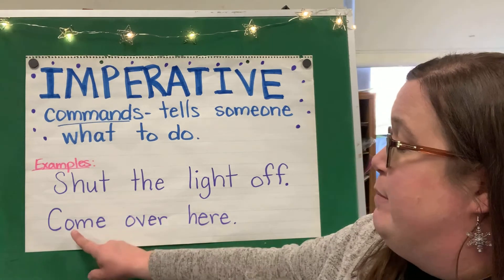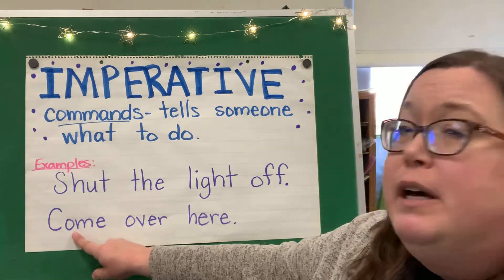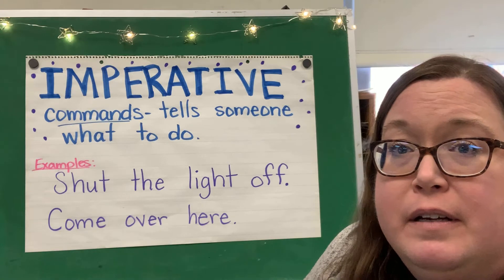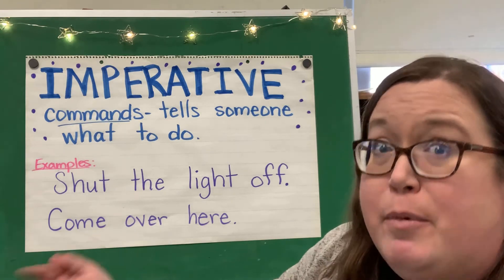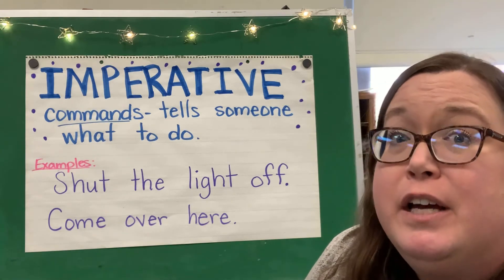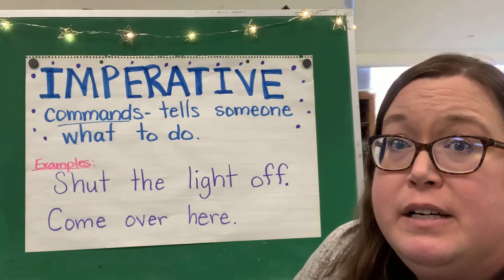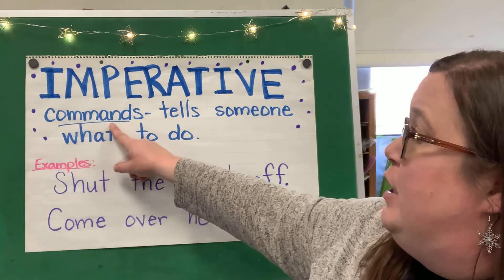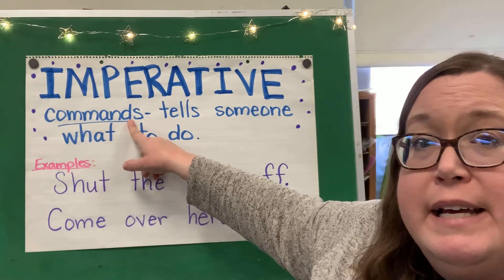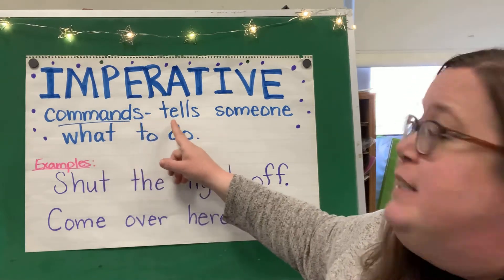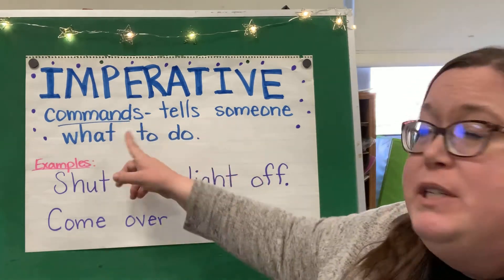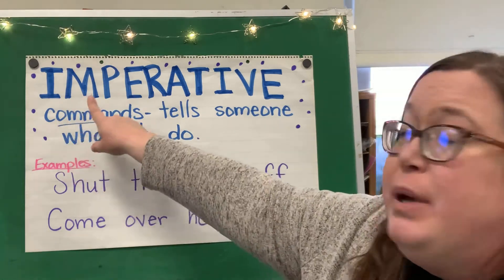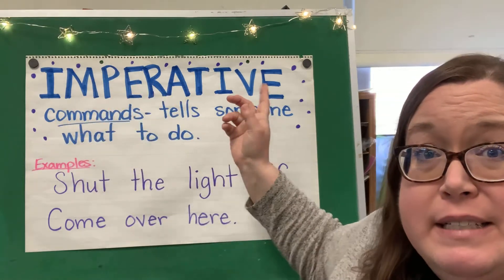Another example would be: come over here. If you're saying come over here, you're telling someone to do that. So anytime that you are writing a sentence that commands and tells someone what to do, it's called an imperative sentence.